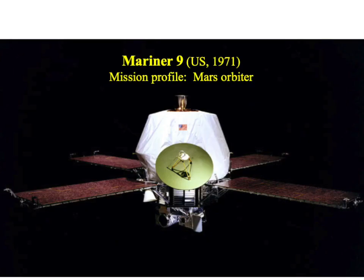Here's the Mariner 9 spacecraft that we mentioned earlier, the first successful Mars orbiter. It's powered by solar cells, which we can see in a sort of an X pattern. We can see the high-gain antenna for communicating with Earth. At the bottom, we see the instrument platform where the cameras and so forth are. And at the very top, we see the expansion nozzle for the rocket motor that put Mariner 9 into orbit around the planet.